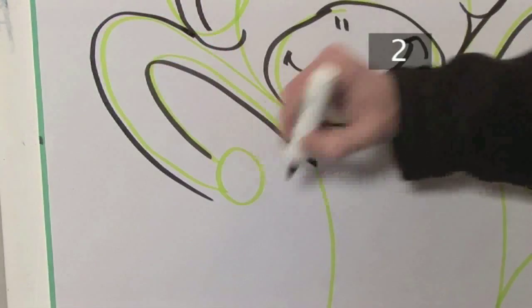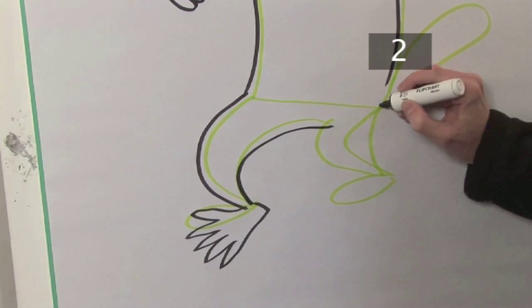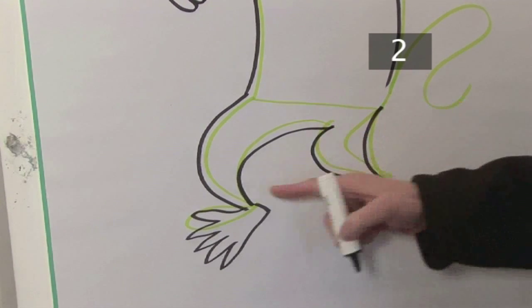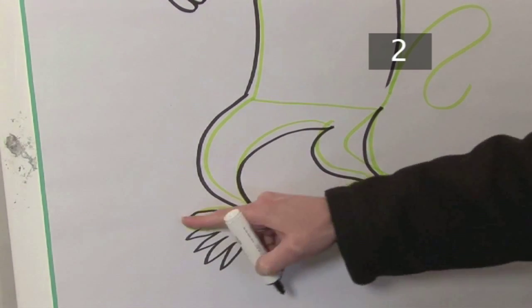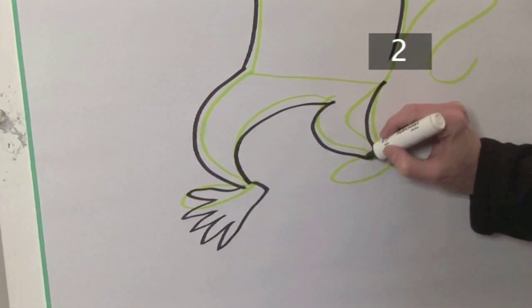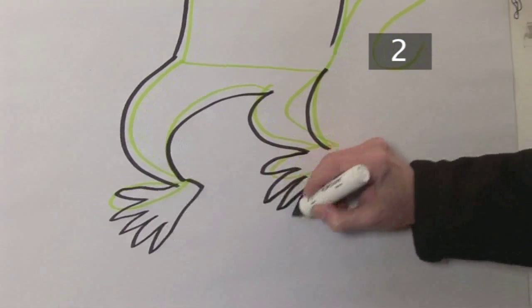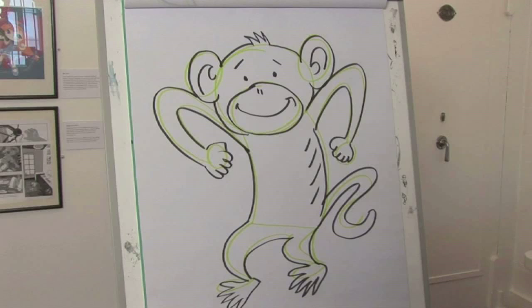Now go over those long monkey arms and legs. When drawing his toes, remember that monkeys have longer toes than we do. There we go, a cheeky monkey.